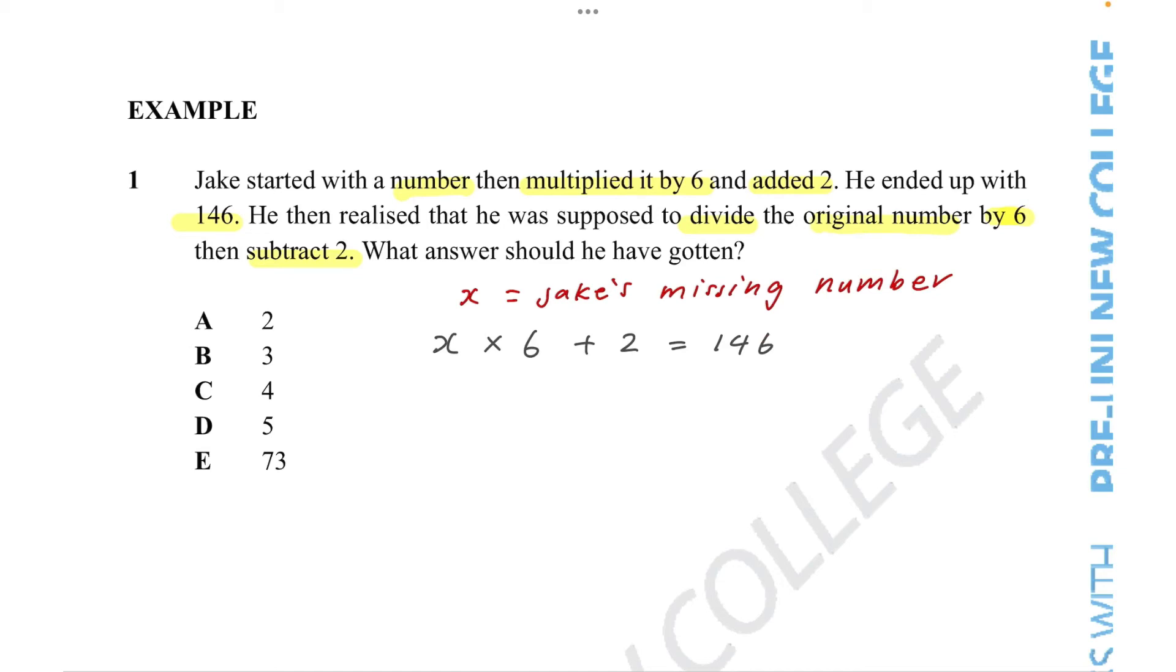But there is a second one. What is the second one? He realized that he was supposed to divide the original number by 6 and then subtract 2. What answer should we have gotten? So in order to figure out the question mark, we need to first solve the first equation. And the first equation is what we've been doing beforehand: solving an unknowns and switching them around. So let's solve what x is.